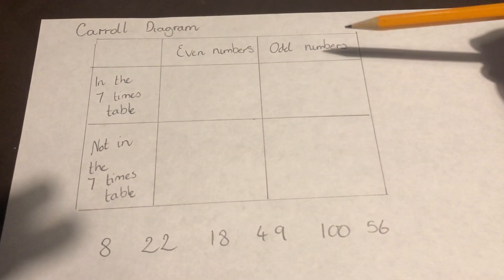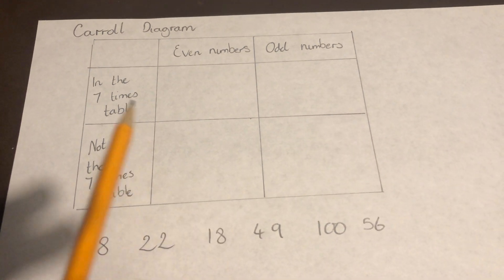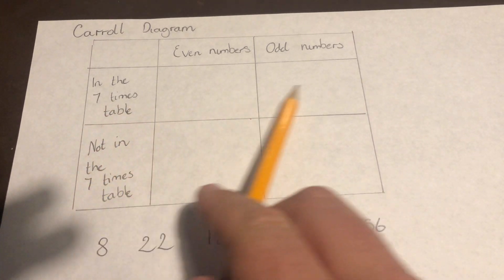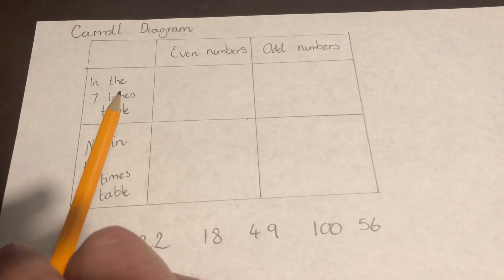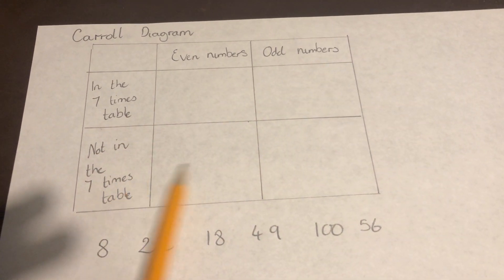So if we look at this, it is a Carroll diagram. It's a lot like the speed tables that we've done. In this row here, all of the numbers will be in the seven times table. In this row here, they are not.